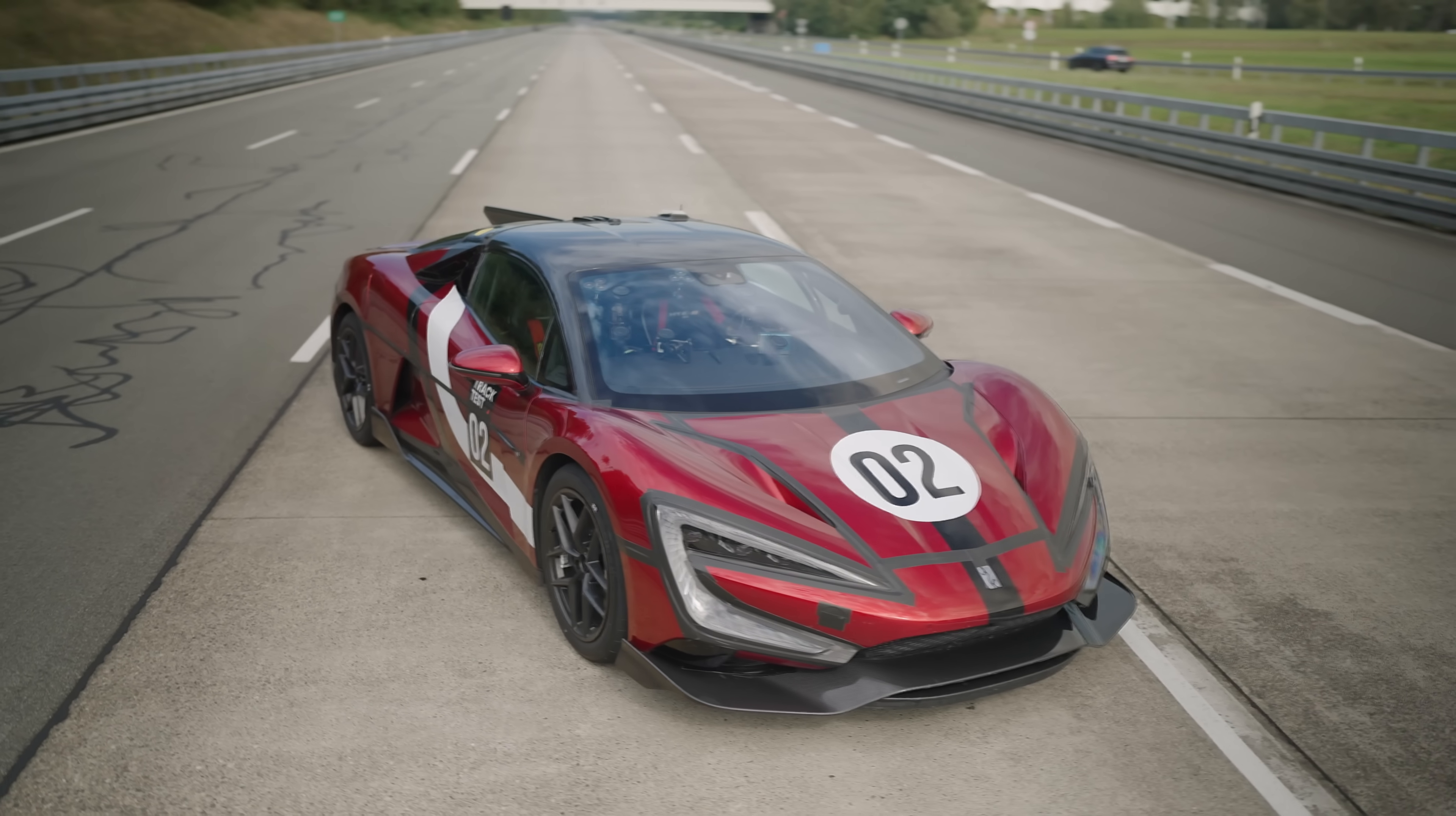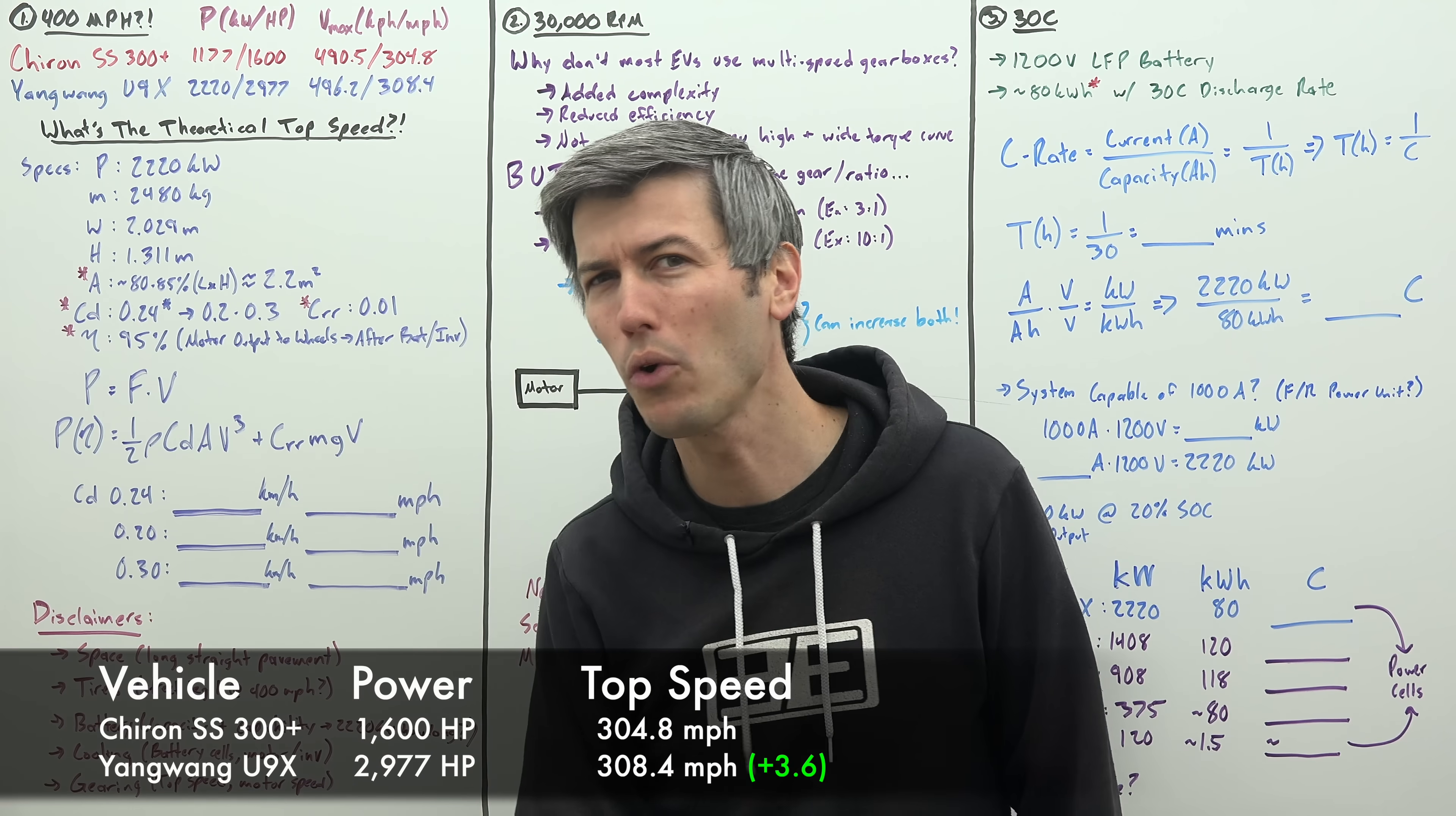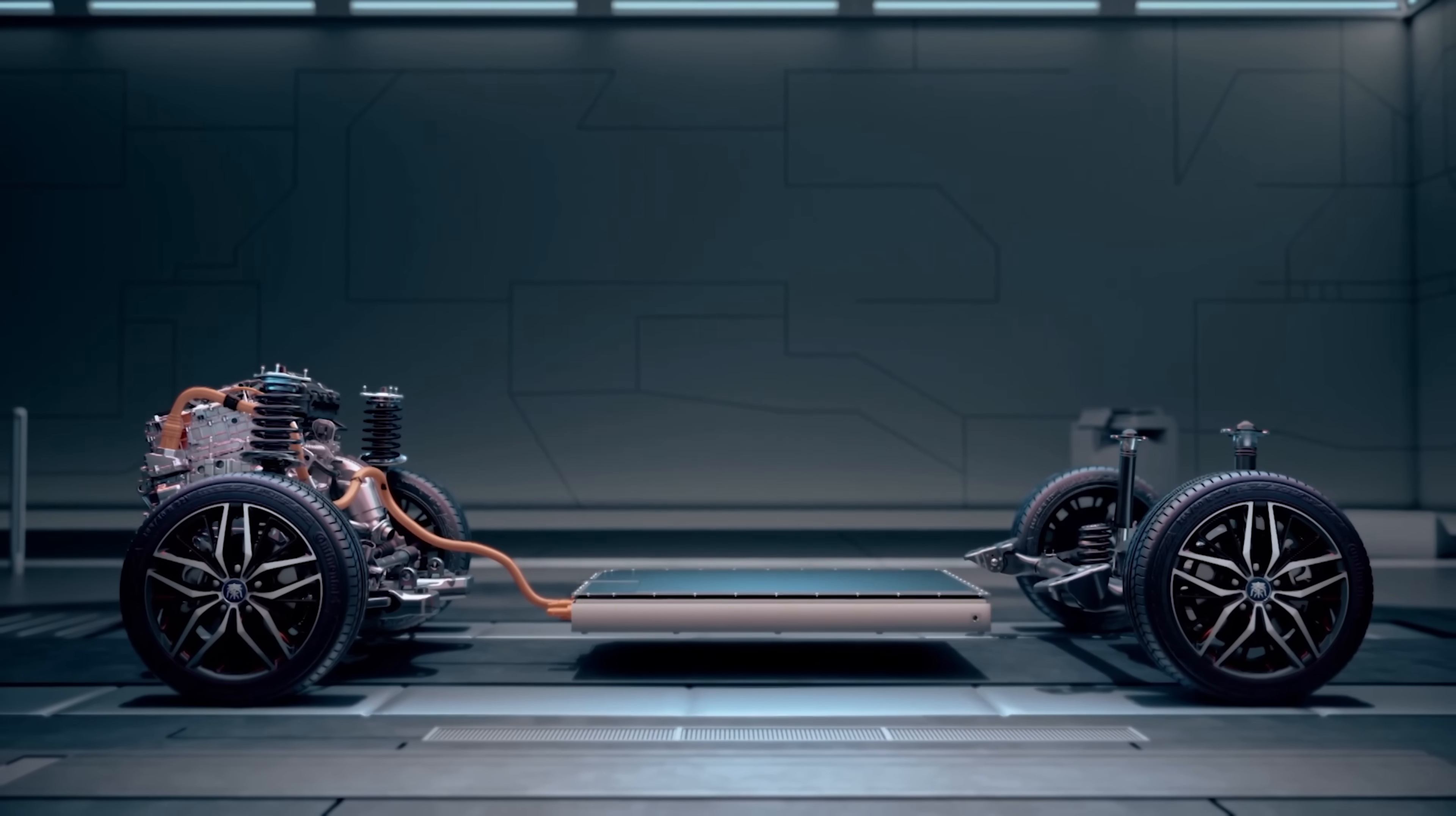So for this video, I want to focus on three aspects of this car. First, what's its actual top speed? Because if it really has nearly 3000 horsepower, that's nearly double that of the Bugatti Chiron, which made its record-breaking run with 1600 horsepower. And yet the U9X is only beating that record by less than 4 miles per hour. There's definitely still more in the tank, or battery. Is 400 miles per hour possible? Second, what's so special about a 30,000 rpm motor? And third, what does a 30c discharge rate mean? Because when you compare this to the rest of the industry, it's genuinely nuts.